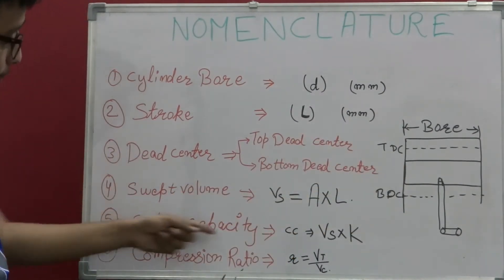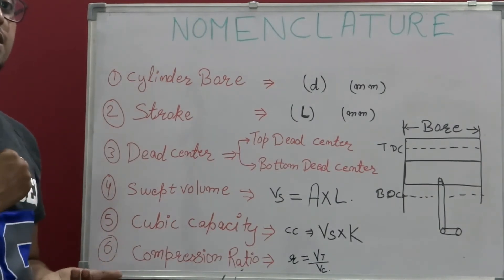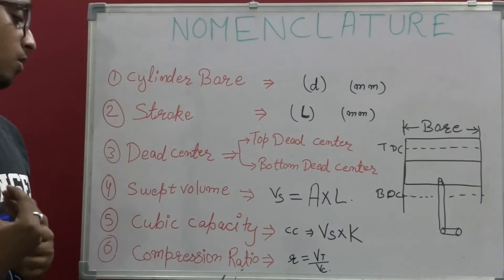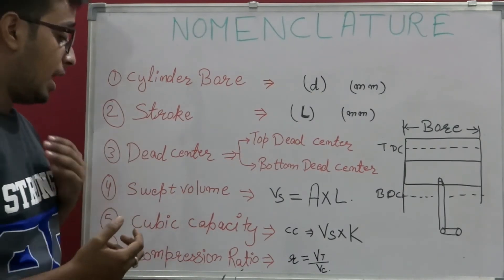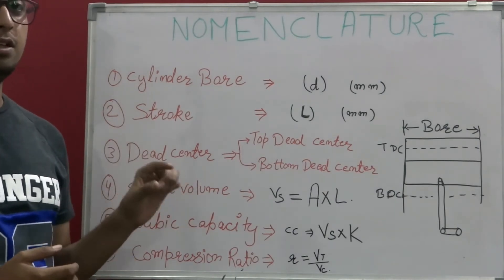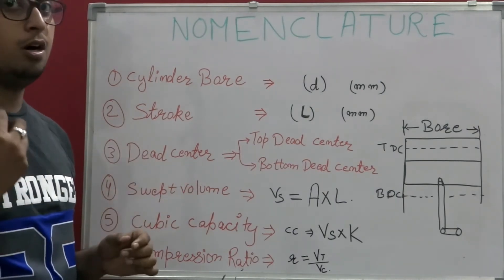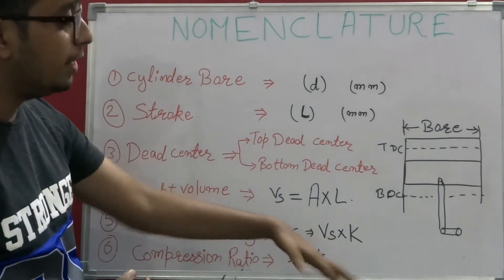After that we have cubic capacity down over here. Cubic capacity is the most common word or a common thing we hear in an automotive engine. And CC you can see on every car, it is written on top of an engine or on its car manual. CC is basically the swept volume into the number of cylinders.